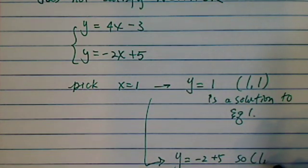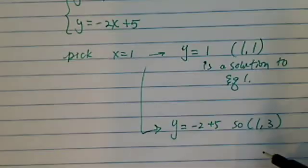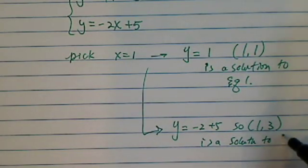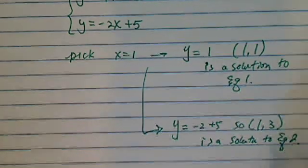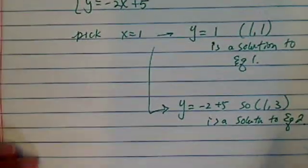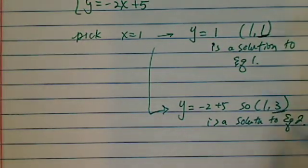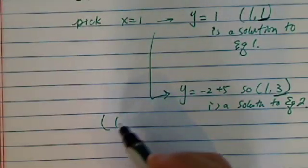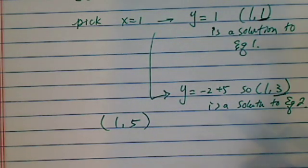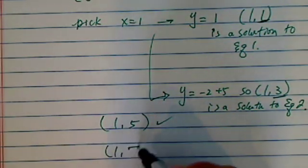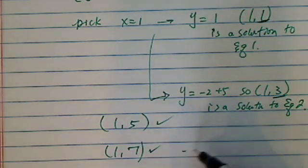So (1,3) is a solution to equation 2. All we have to do is pick a point such that y is neither 1 nor 3. For example, (1,5) will satisfy neither equation. (1,5) will do, (1,7) will do. The list goes on.